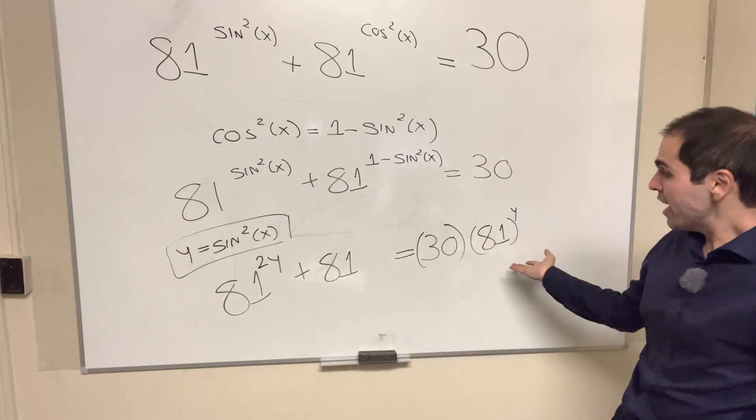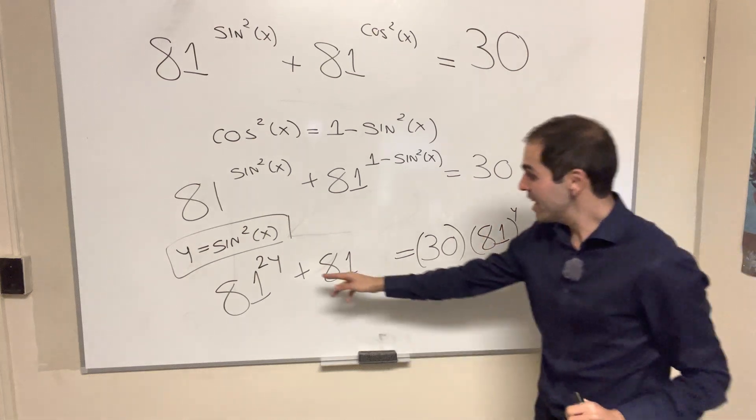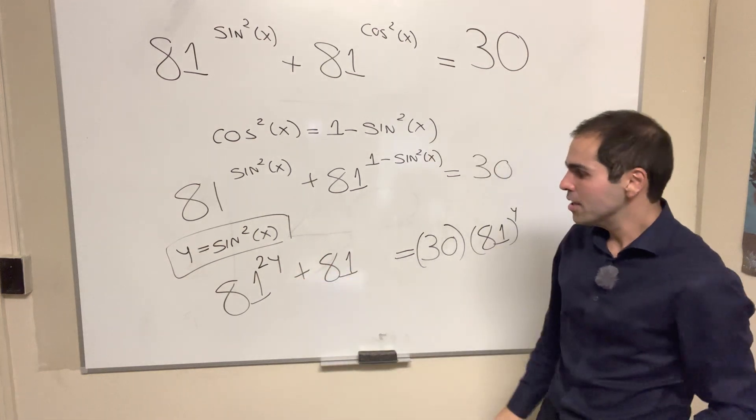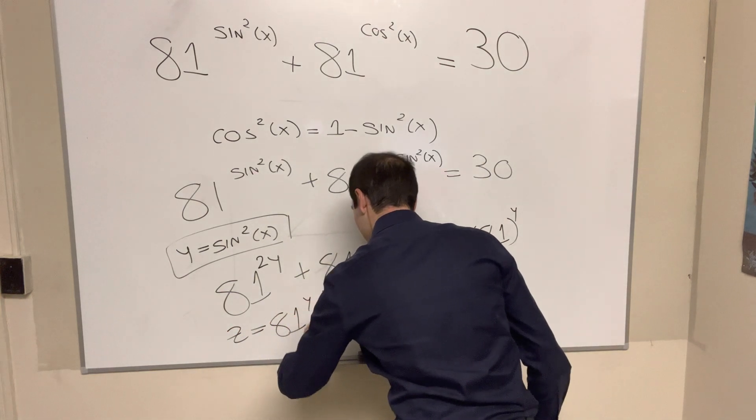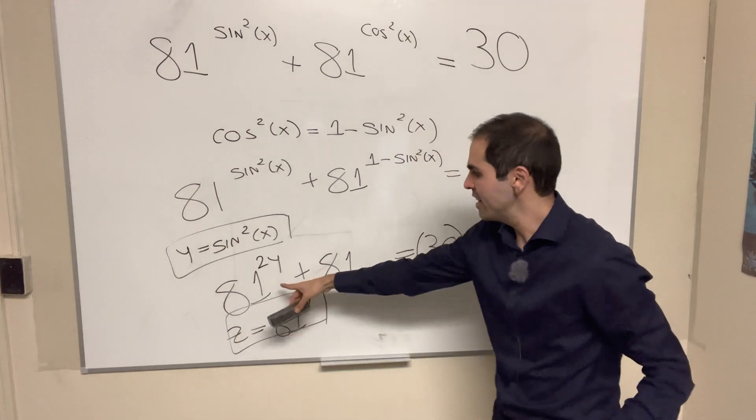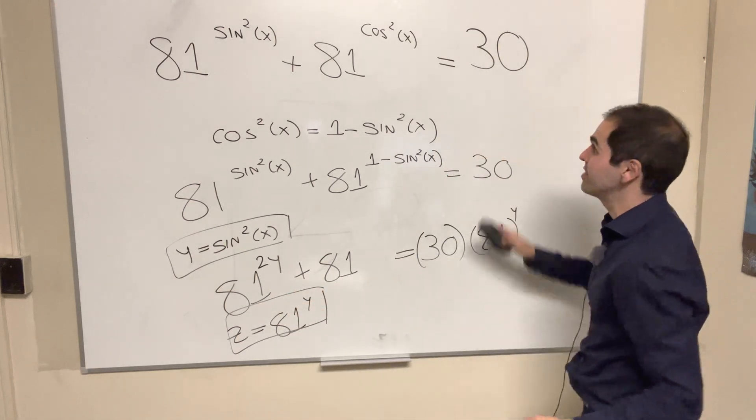Which actually becomes a quadratic equation, weirdly, if you simply let z be 81 to the y. Because then this becomes z squared, this is 81, and this is 30z.